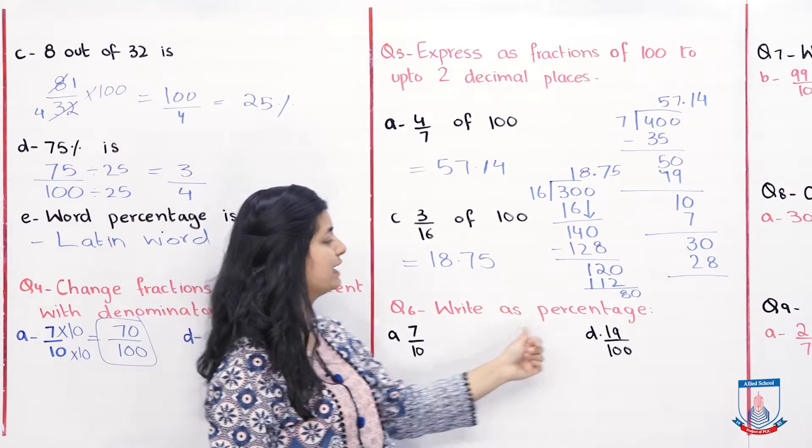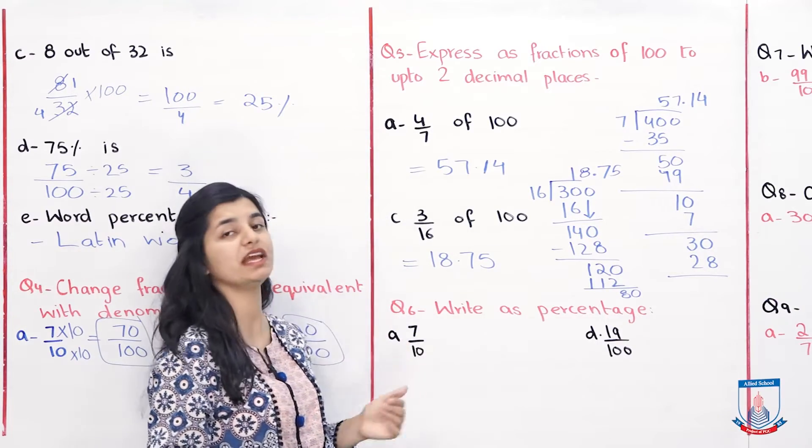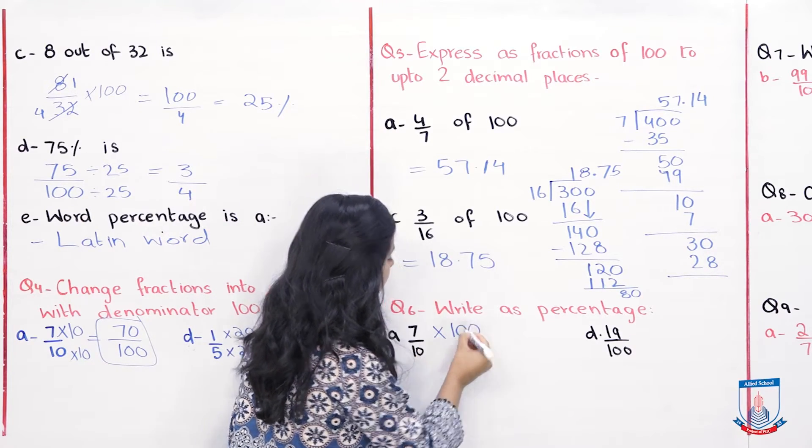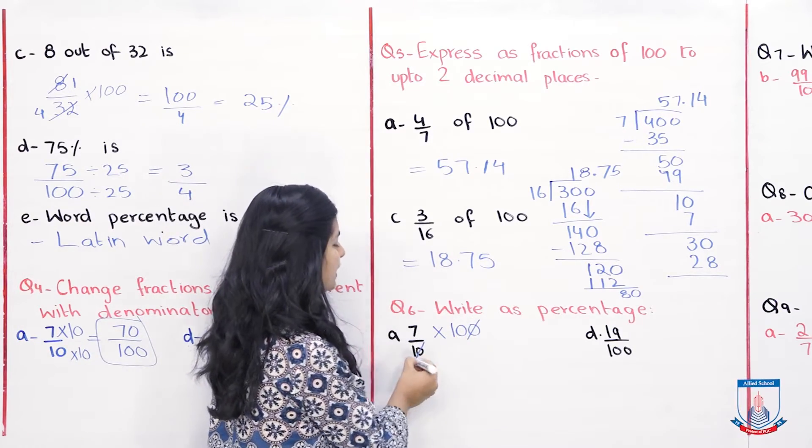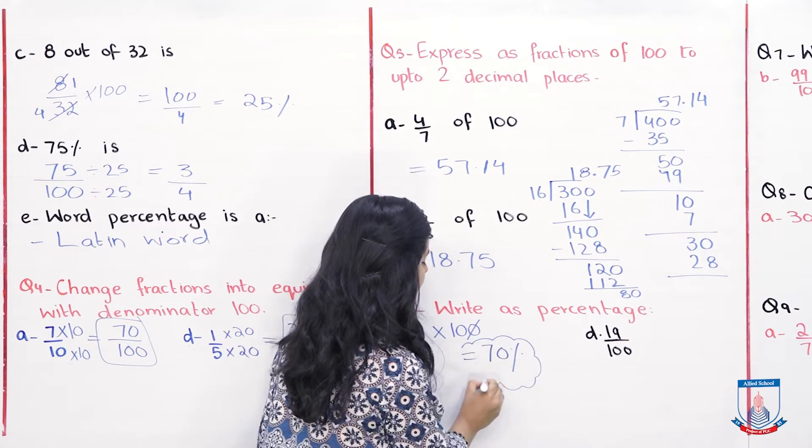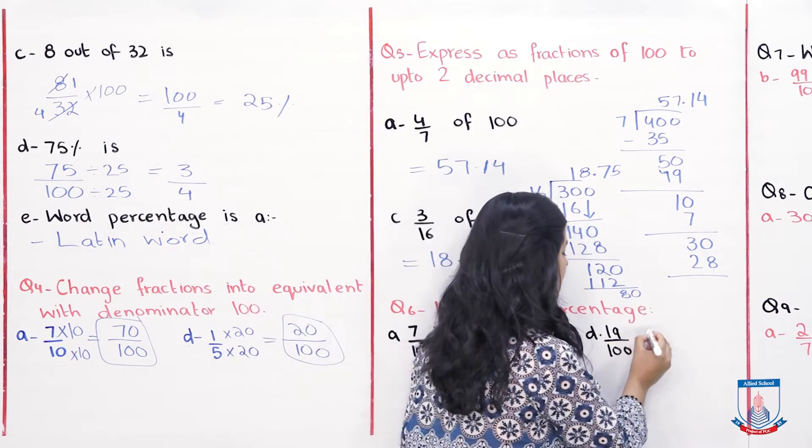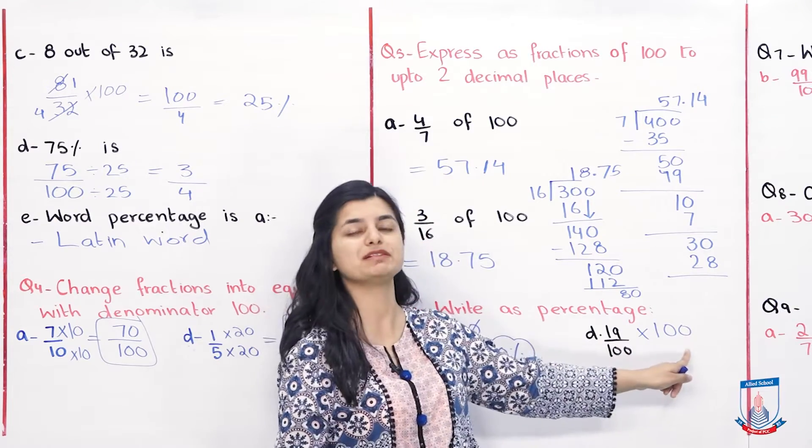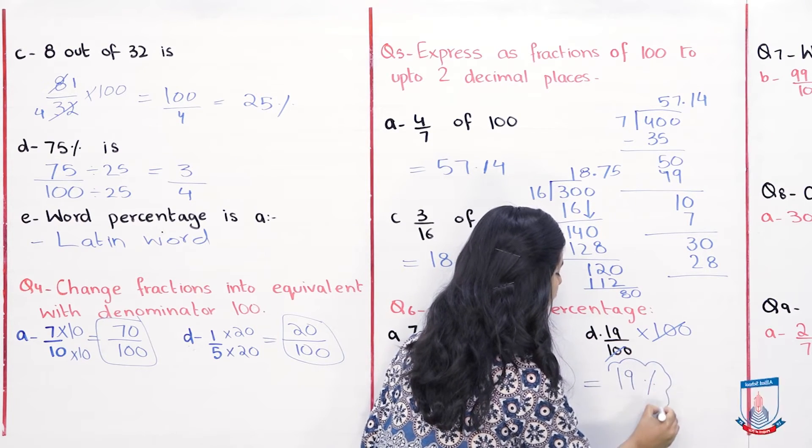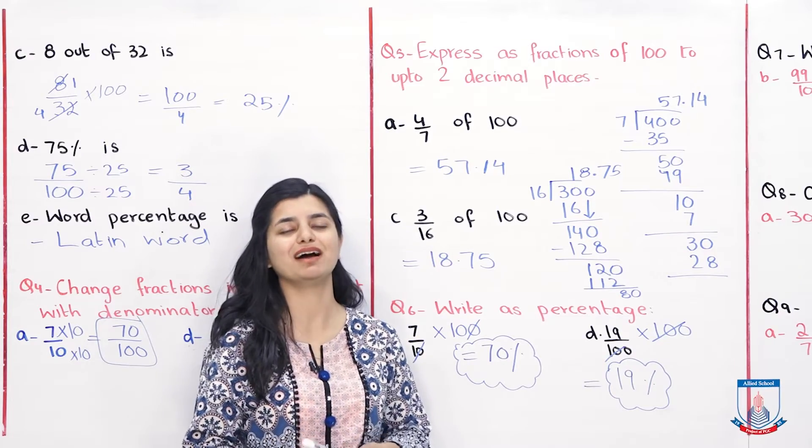Aage chalte hain aur dekhte hain part 6 write as percentages. Now you have fractions that you have to convert to percentages. Jab aapko fraction diya jata hai usko percentage mein tabdil karna hota hai to hum kya karte hain? Simply 100 se multiply karte hain. Ab jab hum isko 100 se multiply karenge, zero zero se cancel ho jae ga aur 7 into 10 hai 70 percent. Eek or example kar lete hain. Part D ki example jahan per aapne phir se jab 100 se multiply karna hai, kya 100 aur 100 aapas me cancel ho jae ga? Yes definitely. Toh aapka answer rae ga 19 percent.